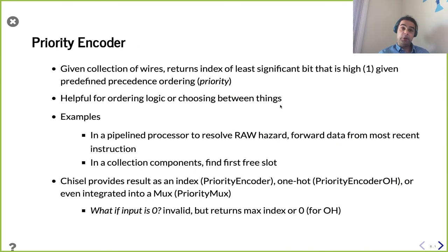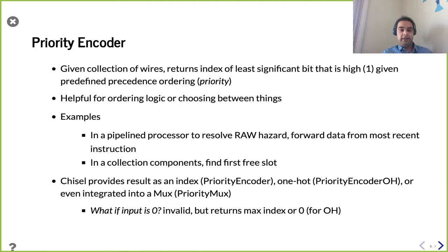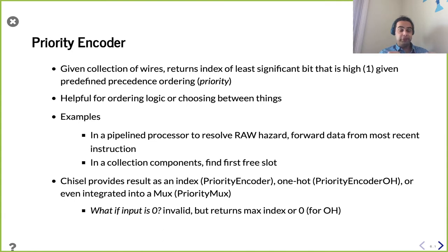Another type of encoding is something referred to as a priority encoder. We're going to have a collection of wires, but unlike one-hot encoding, at the inputs, multiple wires can be one — there's no such constraint. It's a collection of individual binary signals. What we want to find is the highest priority one. The Chisel standard library's version of priority encoder finds the least significant bit that is one. Whether it's the lowest or highest is something you just need to know when you make your design. The important thing is there's a static priority.